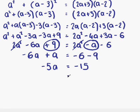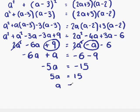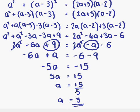At this point we have minus 5a equals minus 15. We can get rid of the minus signs by multiplying through by minus 1, giving us 5a equals 15. That means a equals 15 divided by 5, so a equals 3. And that's our final answer.